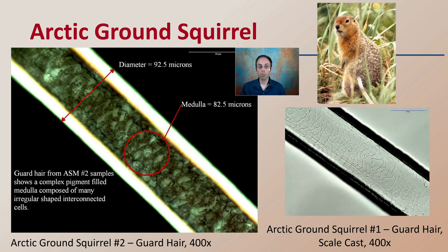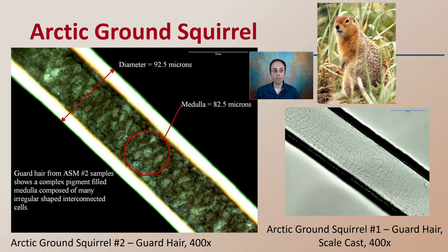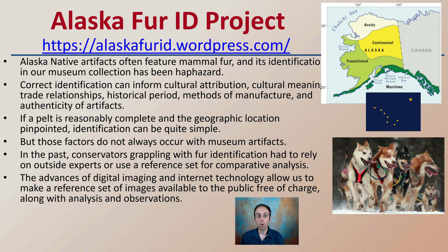Then we have the arctic ground squirrel, where the diameter-to-medulla ratio is a very common characteristic used for comparison. The scale cast also provides a source of comparison and classification. This is only a small sample, but if this interests you, the Alaska Fur ID project at alaskafurid.wordpress.com is a great resource with a lot of different animal hairs for comparison. I highly recommend checking it out.